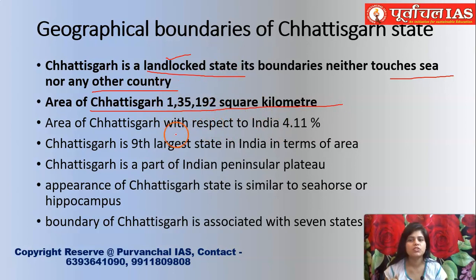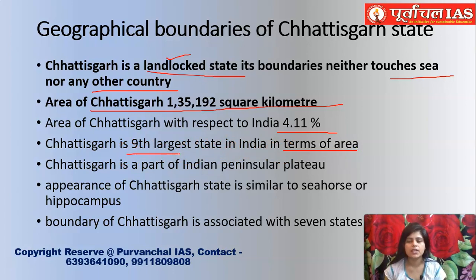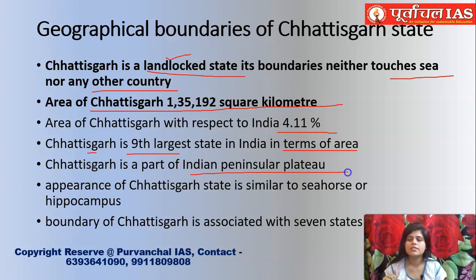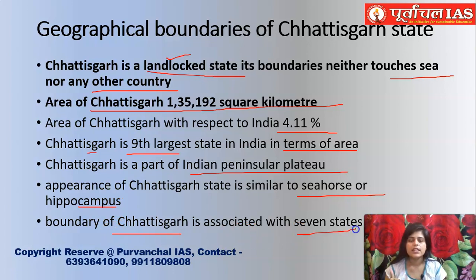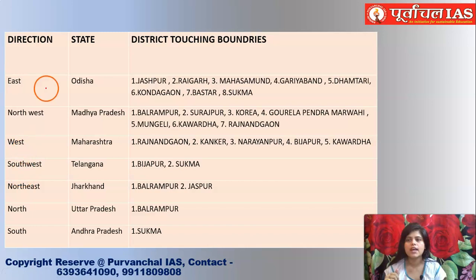The area of Chhattisgarh is 4.11 percent of India's total area, making it the ninth largest state in India by area. In terms of population as per Census 2011, Chhattisgarh is the 16th largest state. Chhattisgarh is part of the Indian Peninsular Plateau and its shape is similar to a seahorse or hippocampus. Chhattisgarh shares its boundary with seven states of India.